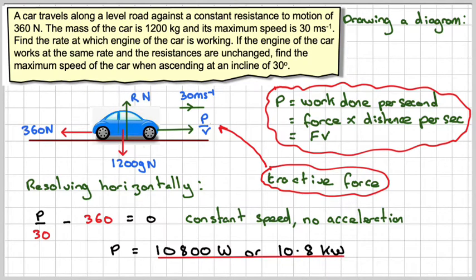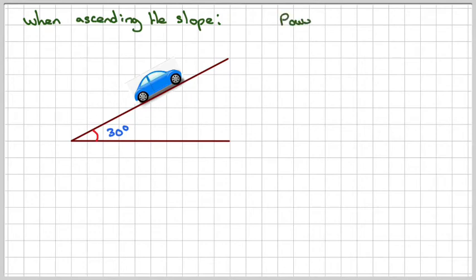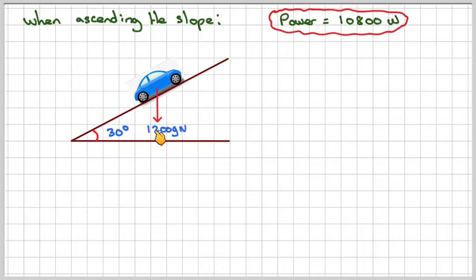Right, we now got that power. So we're ascending the slope, and we've got our car going up a slope now. The same power, 10,800 watts. Now, the forces acting are going to be 1,200 G newtons acting downwards, a normal reaction which is perpendicular to the slope.